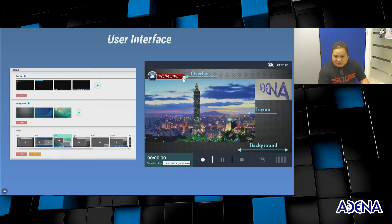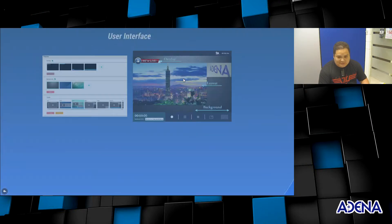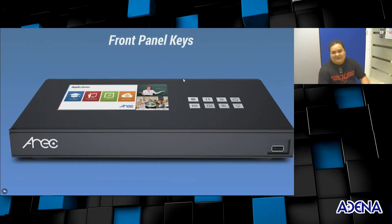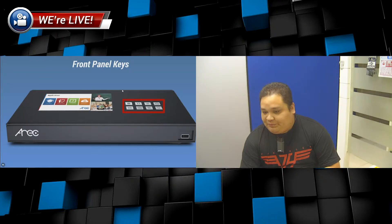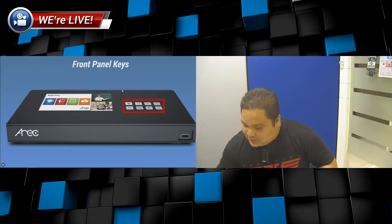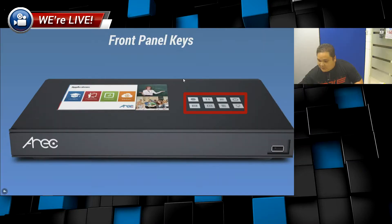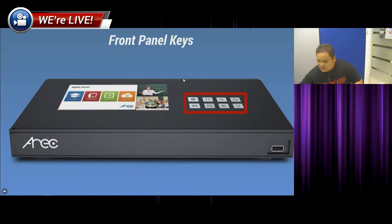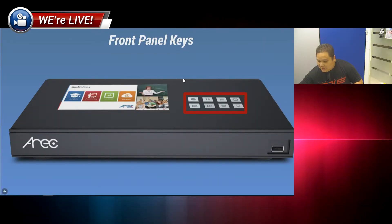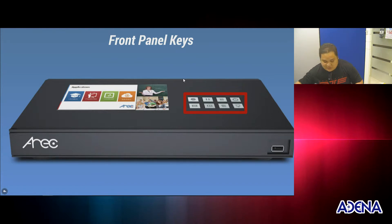The next way to control the system is by the front panel keys, which are located right here. Just by pressing a few buttons, you can change the layout, you can change the background color, and you can change the overlay.